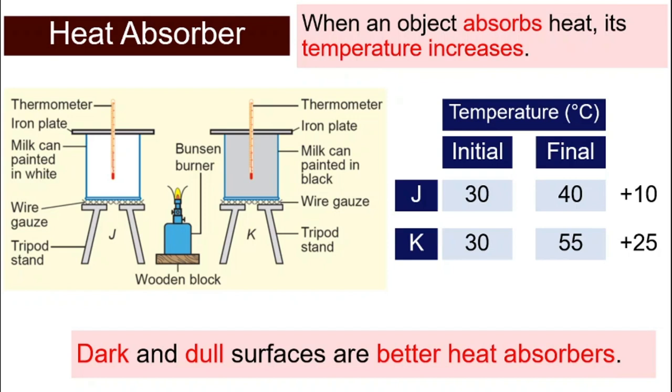This gives us the conclusion that the dark and dull surfaces are better heat absorbers. Meaning they can absorb or receive or bring in heat better compared to white and shiny surfaces.